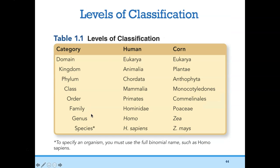Here are the levels of classification. Humans belong to domain Eukarya, kingdom Animalia, phylum Chordata, class Mammalia (mammals), order Primates, family Hominidae (great apes), genus Homo, and our species is Homo sapiens. You never say just 'sapiens' — you say the species is Homo sapiens. Corn belongs to the same domain as us — eukaryotes — because they have a nucleus, but they belong to kingdom Plantae. Corn's genus is Zea and the species is Zea mays.